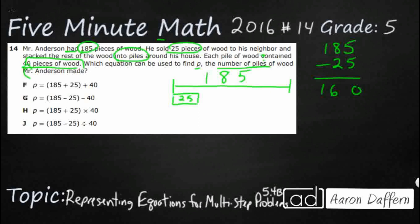So what I can do here, if I want to show division, I can show this. This is kind of like a hybrid strip diagram. How many 40s will there be left after I get rid of my 25? Or, I can take my 160 and say, let's just make that our new total — 160. And we've got our 40 here.